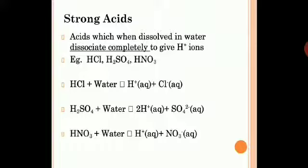You can see the dissociation of some acids here. HCl plus water gives you H+ ions plus Cl− ions. H2SO4 plus water gives you 2H+ ions plus SO4²− (sulfate ions) — sulfuric acid gives 2H+ because its formula contains 2 hydrogen atoms. HNO3 (nitric acid) when dissolved in water gives H+ ions plus NO3− (nitrate ions). All of this happens in the aqueous state.